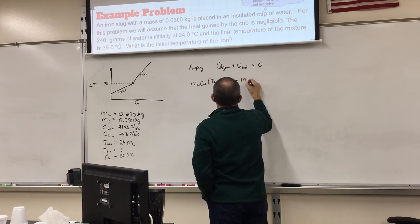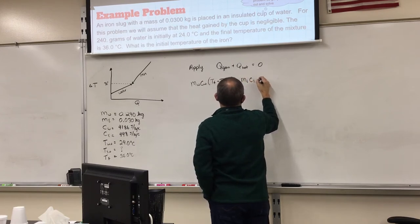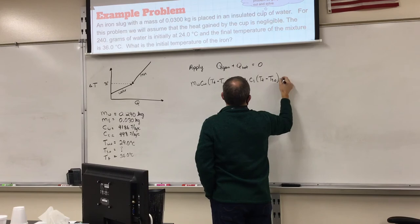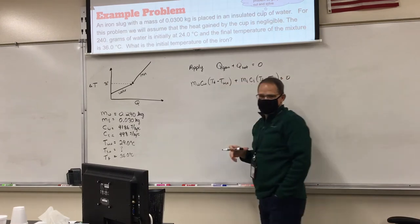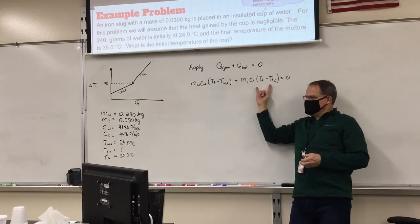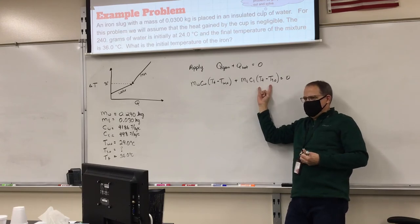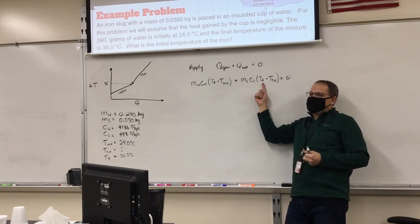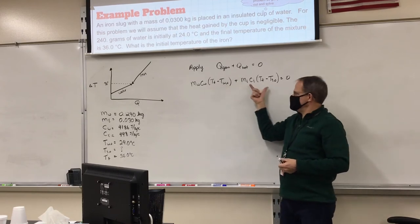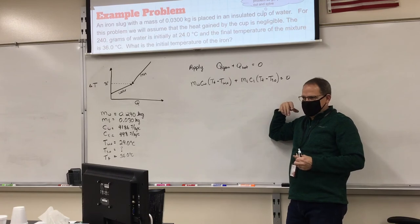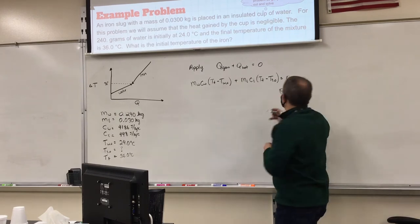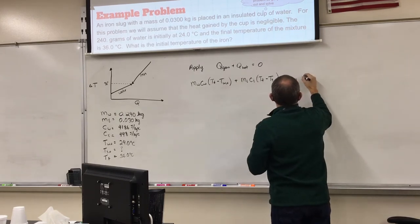Now Q lost for the iron: mass of the iron times heat capacity of the iron times T final minus T iron initial, and the whole thing equals zero. Is this expression positive or negative? Because the final temperature of the iron is less than the initial temperature, that term is negative. So we have a positive something plus a negative something adding up to zero — that works.